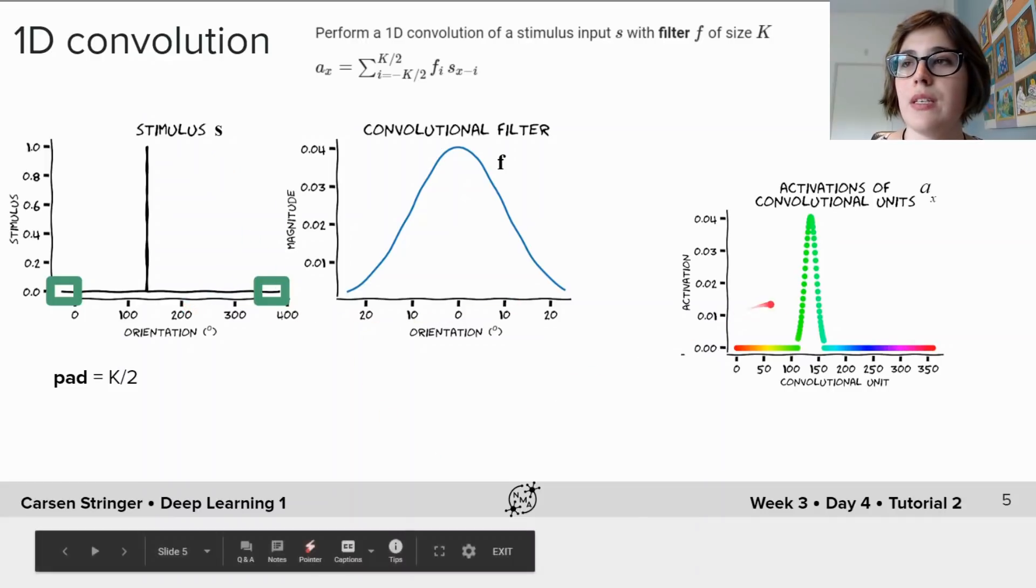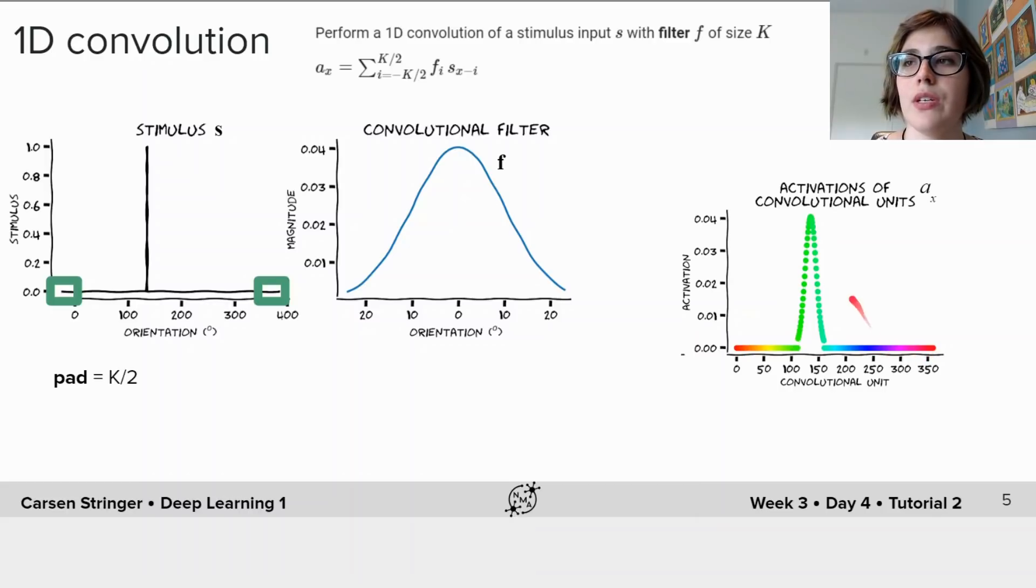So all the units of this given filter, these different dots here, are called a channel. Another parameter of this convolution computation is the stride, and the stride is how often along the stimulus to compute a.